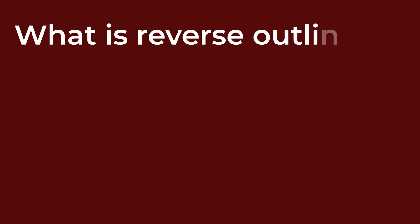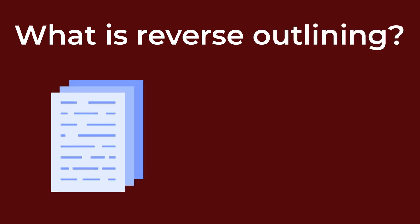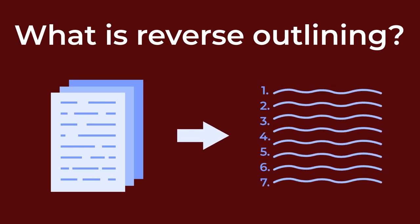Reverse outlining is the process of creating an outline from the draft of an essay. It is an effective way to ensure that the structure of your essay represents the main ideas you want to communicate to your readers in a logical manner. By removing the supporting ideas and writing in your essay and reducing your draft back to your main ideas only, you can check your work to ensure it demonstrates the points you were trying to make.